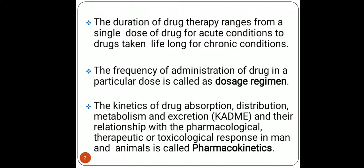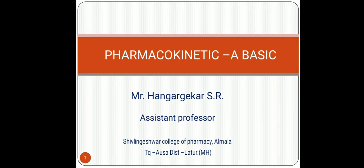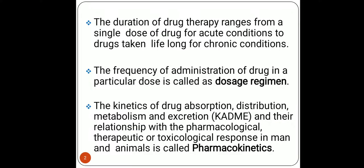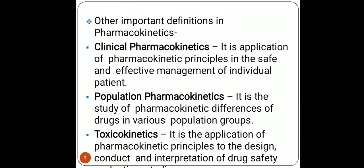Clinical pharmacokinetics is the study of pharmacokinetic principles in an individual patient to treat their disease. Population pharmacokinetics is the study of pharmacokinetic parameters across different populations. Toxicokinetics is the application of pharmacokinetic principles to determine whether a drug gives a toxic response or a therapeutic response.